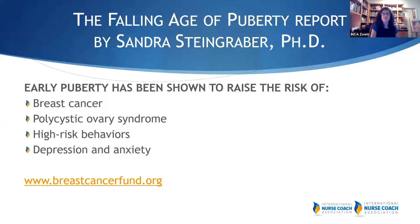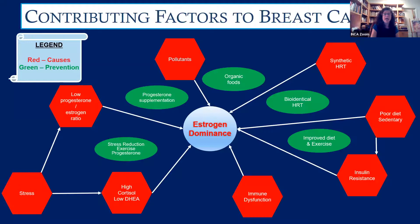She wrote a book on the downstream effects of water contamination exposures. Looking at a diagram of estrogen dominance, the red circles represent causes — and the green represent prevention strategies including organic foods, improving diet and exercise, reducing stress, progesterone, and bioidentical hormones from more natural compounded sources. Lowering the progesterone-estrogen ratio is something a functional medicine gynecologist would work on. Insulin resistance is also very much connected to endocrine disruptors and obesity.